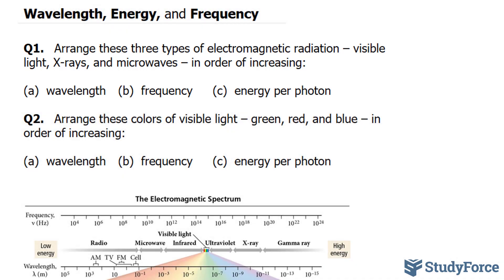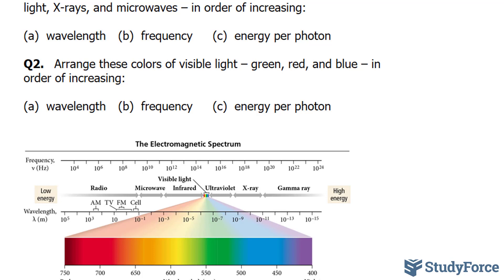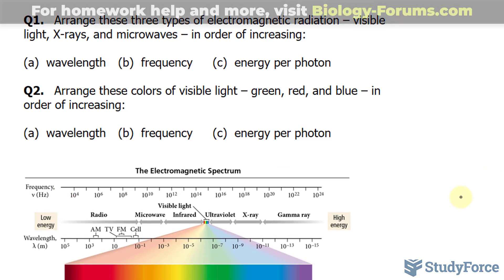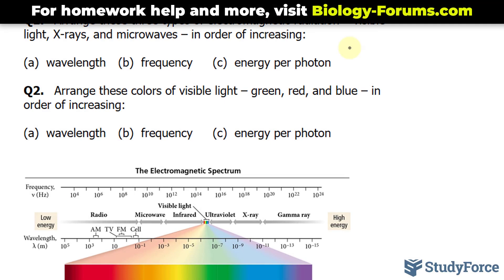Let's start with part A. Before we do that, let's examine the figure shown underneath. You'll notice that the shortest wavelengths start over here, and the largest ones start here. In terms of wavelength, we have visible light, X-rays, and microwaves.